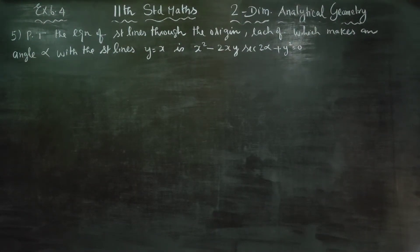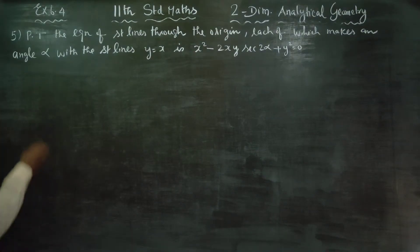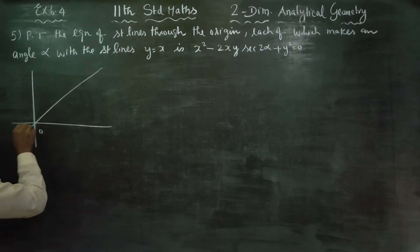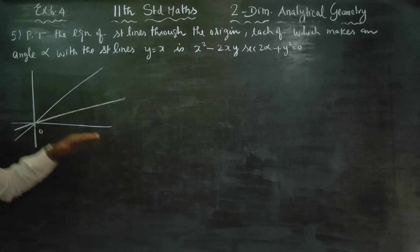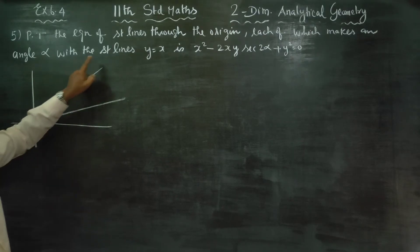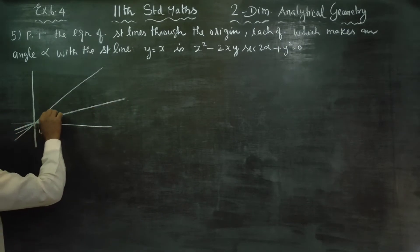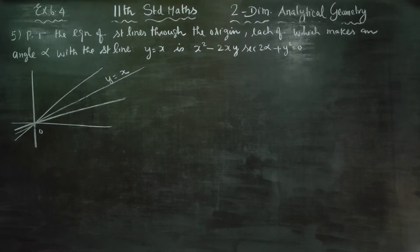Dear 11th standard students, in two-dimensional analytical geometry, exercise number 6.4, sum number 5: prove that the equations of the lines through the origin, each of which makes an angle alpha with the straight line y = x. This is the given straight line y = x.